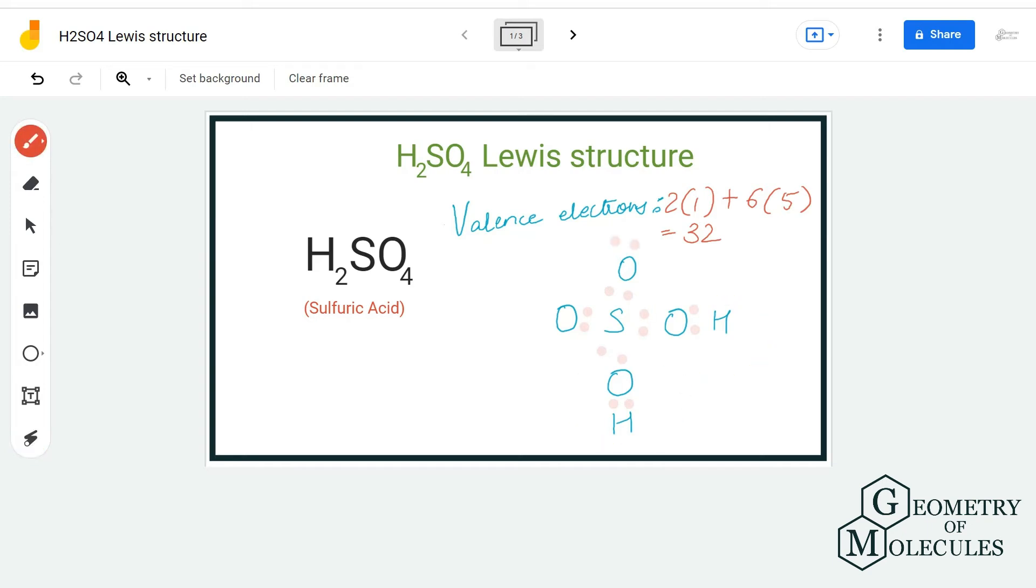Now we will try and complete octets for oxygen atoms by placing the remaining valence electrons. If I place six valence electrons around this oxygen atom, four around this, four around this, and six around this, I will be using up all 32 valence electrons. But this might seem as a correct Lewis structure for H2SO4 because we have used up all valence electrons.